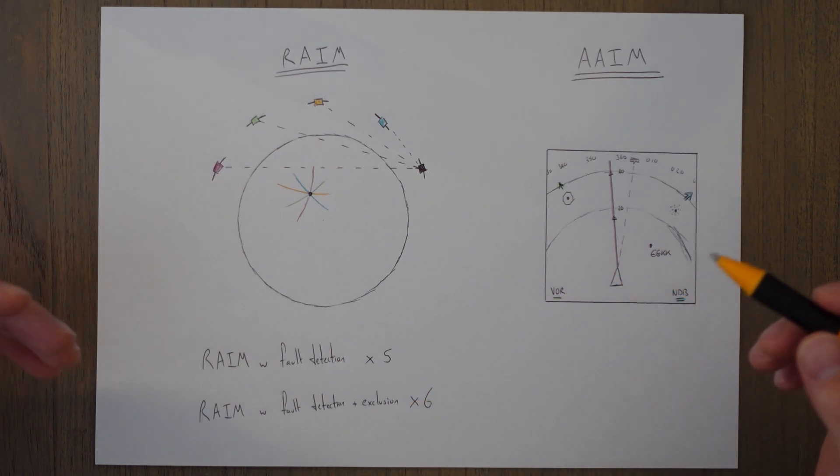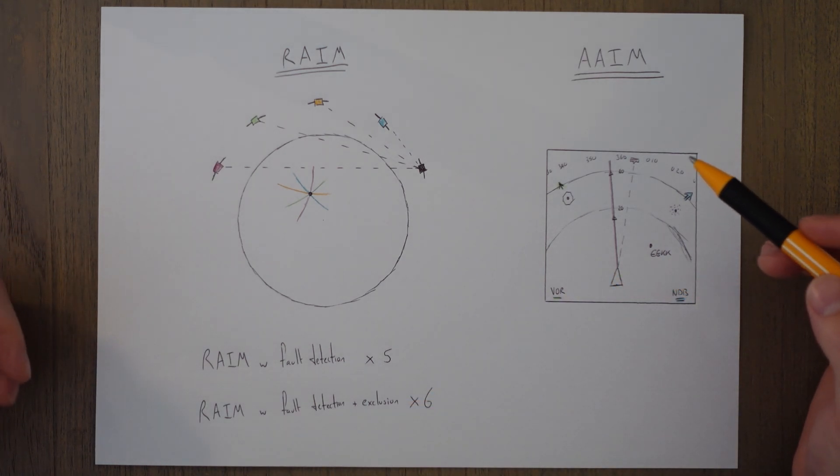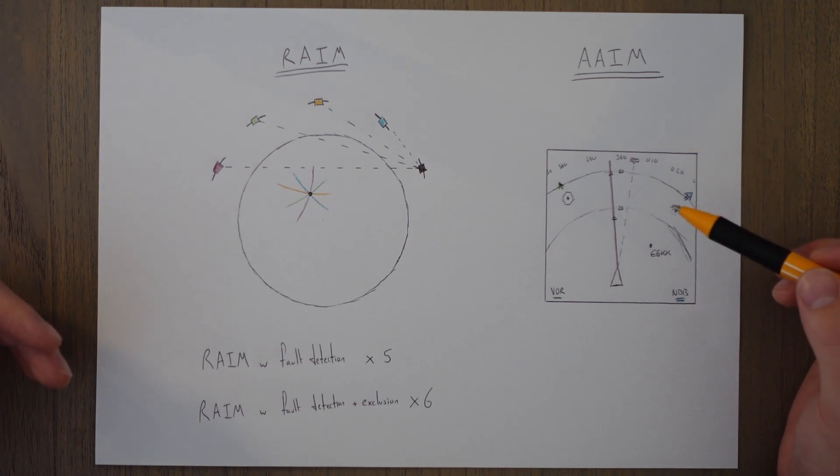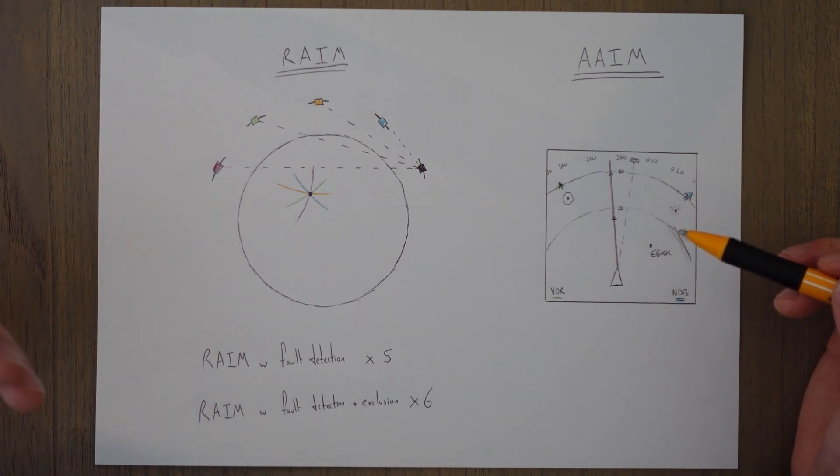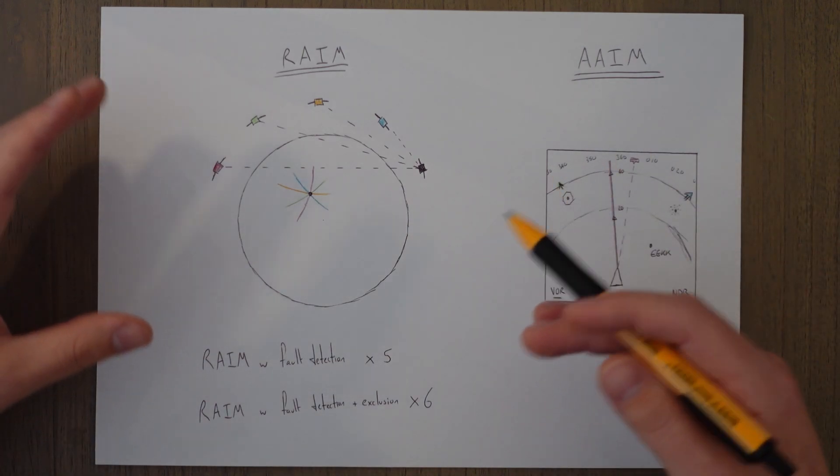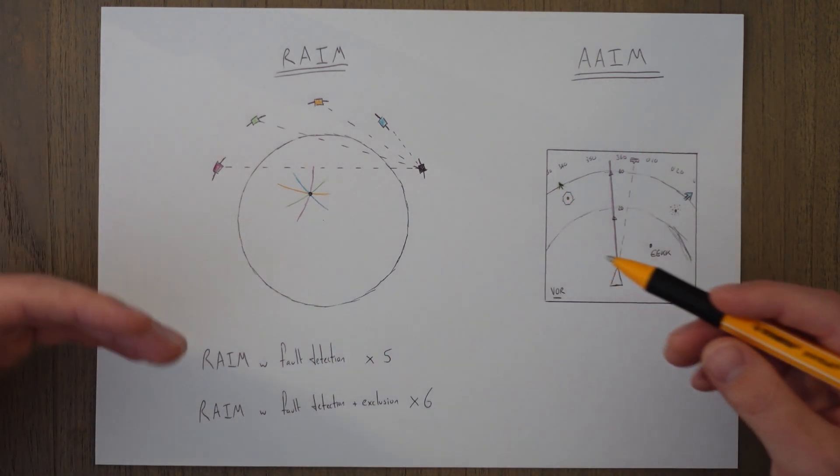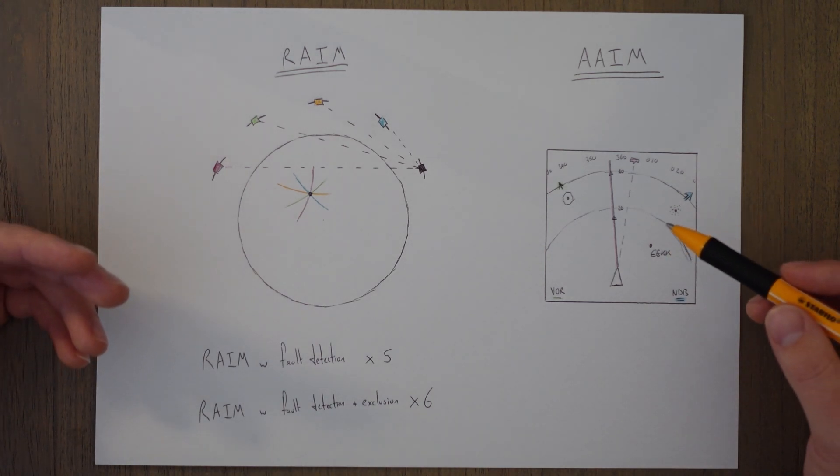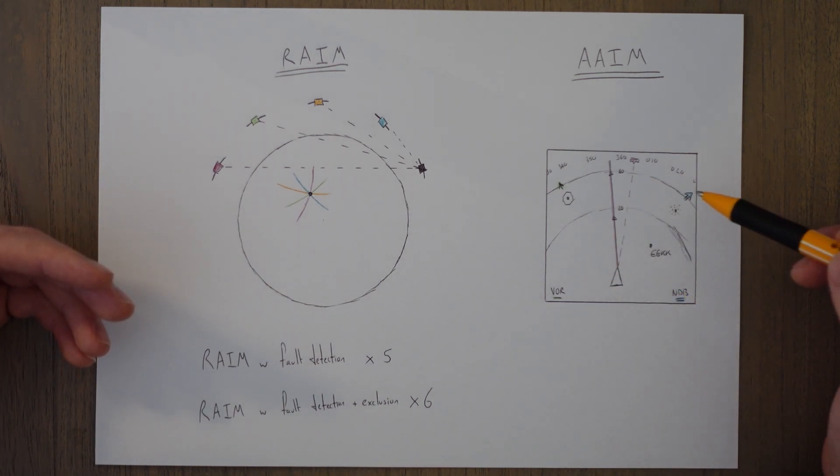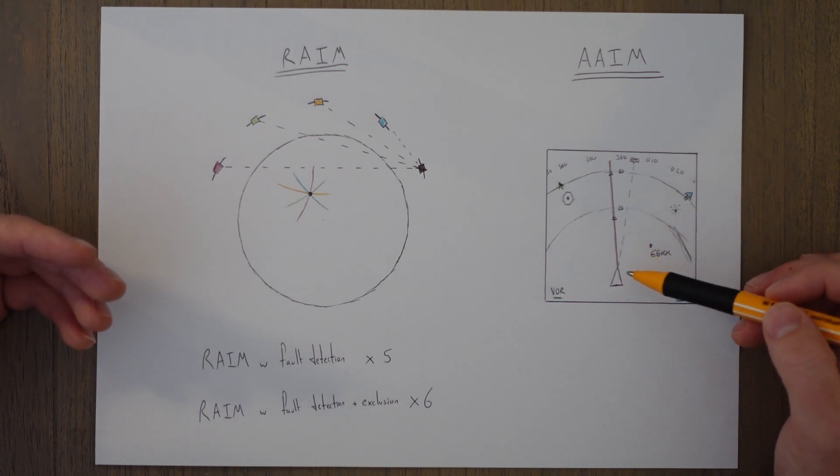The second form of ABAS is called Aircraft Autonomous Integrity Monitoring. In this method, the GPS position is compared to a position calculated using conventional navigation equipment such as VORs and NDBs and that sort of thing. And on modern aircraft, the flight management computer is constantly tuning nav aids and getting position fixes off of these conventional nav aids so that the position can be verified and useful things can be displayed on a navigation display relative to the aircraft position.